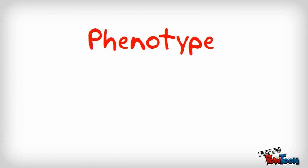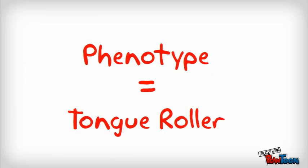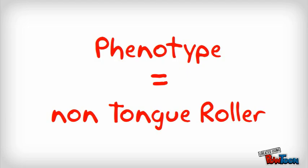Now let's define two more vocabulary words that are going to be important as you investigate the inheritance of traits. The first word is phenotype. The phenotype that you have for a particular trait is what you look like. So if you have a big R and a big R for tongue-rolling, or a big R and a little r, your phenotype would be tongue-roller. If you inherited two little r's, then your phenotype would be non-tongue-roller.